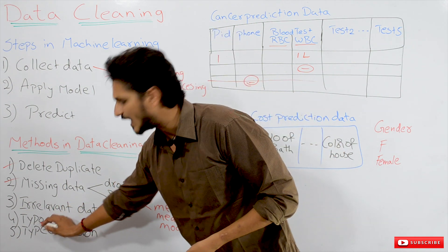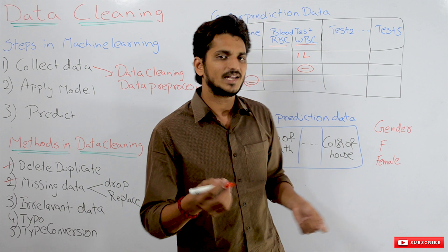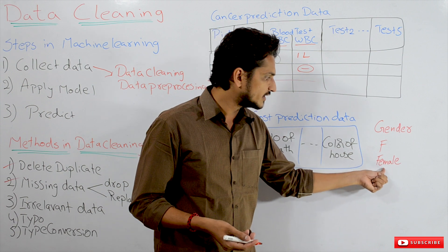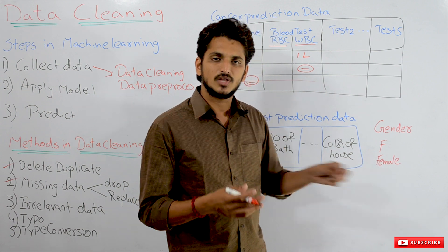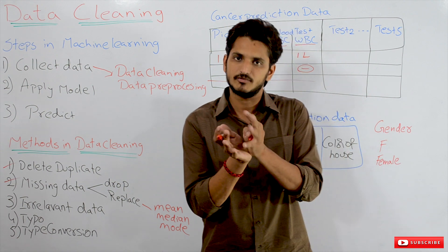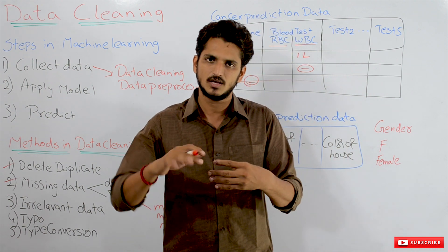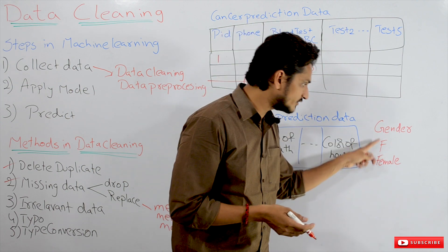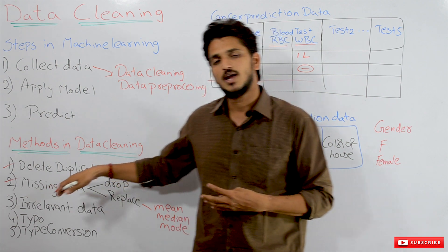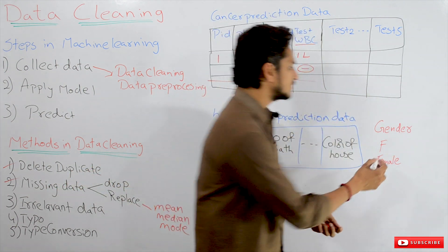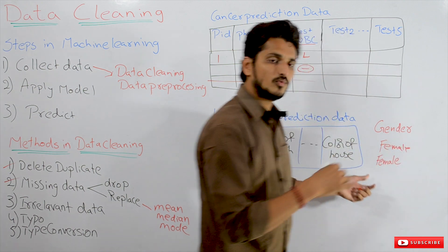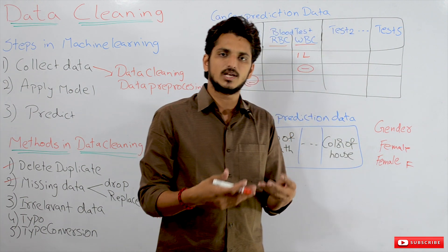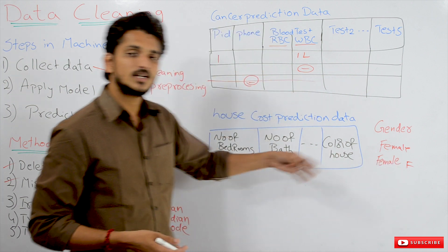The next method is handling typos — typing mistakes. Take an example with a gender column. Some people may write 'F' for female, and some may write 'female' in full. They are not two different values; they have the same meaning. During the data cleaning process, we have to convert and standardize these — either convert 'F' to 'female' or 'female' to 'F'. We have to choose one method and be consistent. These are called typo mistakes.